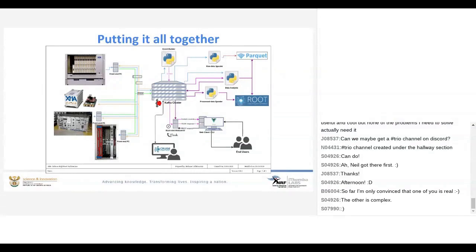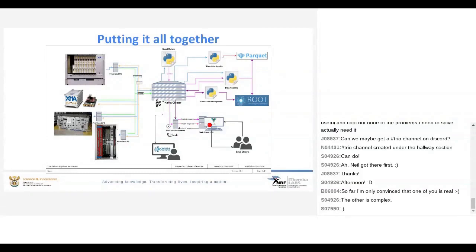Putting it all together, we came up with this high-level architecture drawing, where we have our distinct data sources, an event builder consumer-producer which builds the interesting physics event, a raw data spooler which consumes raw data and stores it in Parquet format, a data analysis consumer-producer which can consume data and either visualize it using ROOT or store it in Parquet format, and a processed data spooler which consumes the bulk event and visualizes it in ROOT. We also use a Flask backend, which provides configuration data for our data sources and can also consume the processed data and expose it to Vue for visualization.